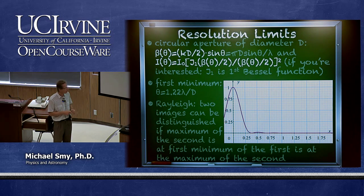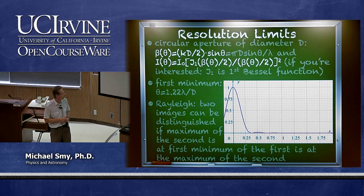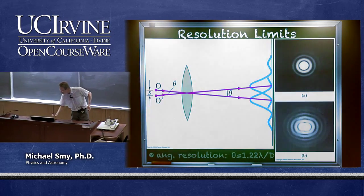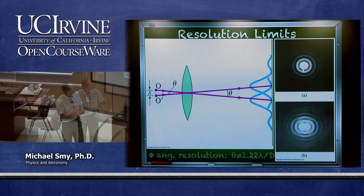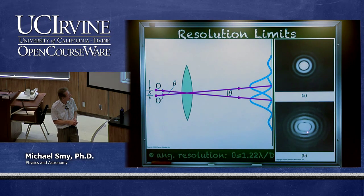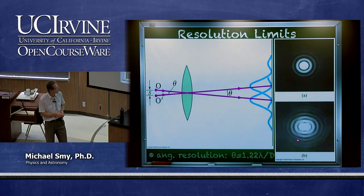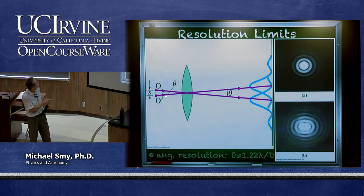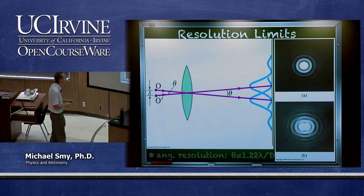Rayleigh formulated a criterion about the resolution limit of an optical instrument: two images can be distinguished if the maximum of the second is at the first minimum of the first — so maximum overlaps minimum. We can look at pictures of Airy disks: here we have a single image, and here a double image separated by the Rayleigh criterion. You really can't get any closer without losing the ability to distinguish them.